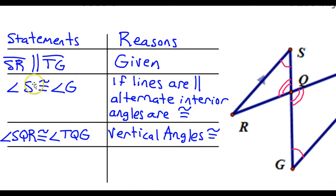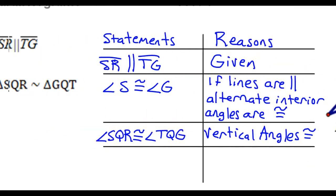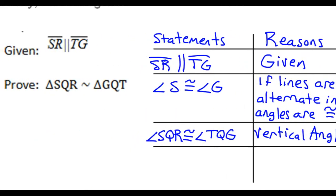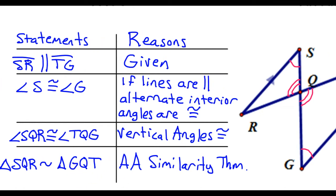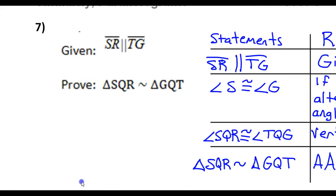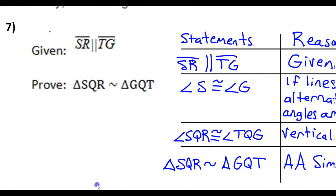Now that we have our angle and our angle, we can go ahead and make our final statement: triangle SQR is similar to triangle GQT by the angle-angle similarity theorem. That is one proof.